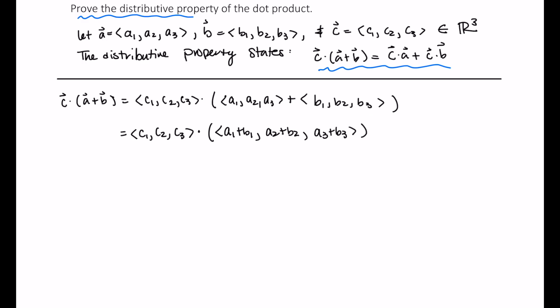Now, according to the definition of the dot product, this is equal to C1 times A1 plus B1, plus C2 times A2 plus B2, plus C3 times A3 plus B3.